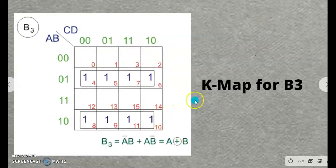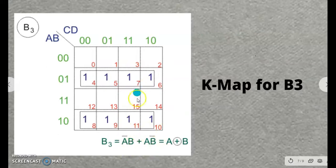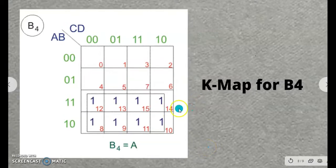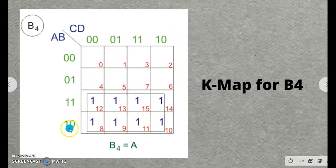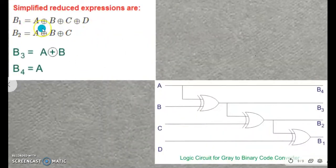This is the KMAP for B3. There are two quads — a quad is a loop of four adjacent ones. When simplified, you get A-bar·B plus A·B-bar, which is the equation for A XOR B. So we write A XOR B for B3. For B4, the last two rows are all ones forming one octet — a combination of eight adjacent ones. Going vertically, all column values cancel, and going horizontally, A is the common factor. So the result for B4 is simply A. We have now obtained all simplified expressions for B1, B2, B3, and B4.